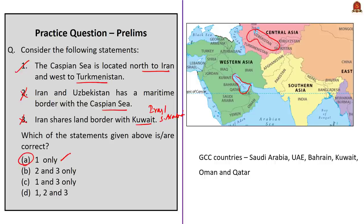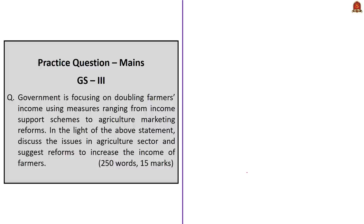In this context, know that the Gulf Cooperation Council is a regional council consisting of six nations: Kuwait, Saudi Arabia, Bahrain, Qatar, UAE, and Oman. With this information, let us move on to the next question. This practice mains question is relevant for General Studies Paper 3: 'Government is focusing on doubling farmers' income using measures ranging from income support schemes to agriculture marketing reforms. In light of the above statement, discuss the issues in the agriculture sector and suggest reforms to increase the income of farmers.' This is a 15-mark question to be written in 250 words.